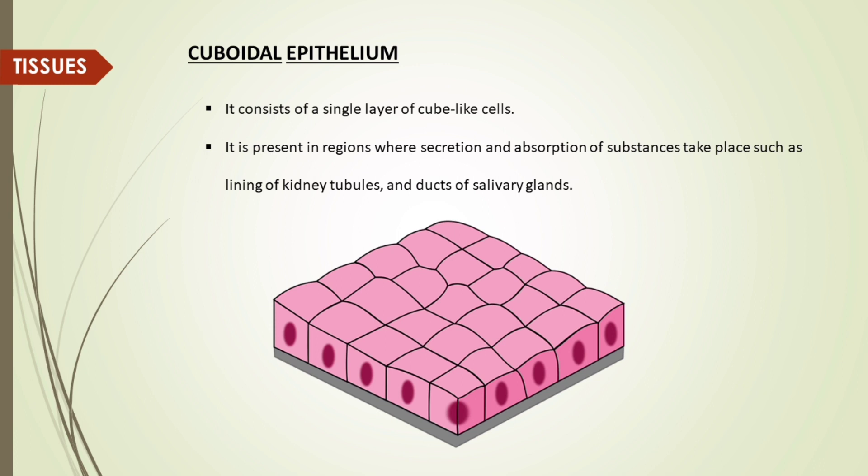Cuboidal epithelium consists of a single layer of cube-like cells. It is present in regions where secretion and absorption of substances takes place, such as lining of kidney tubules and ducts of salivary glands.